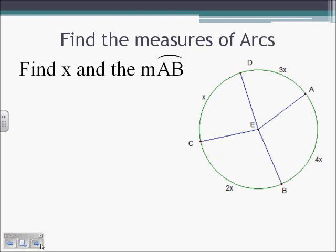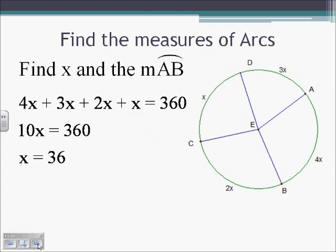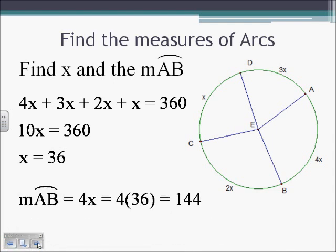Finding the measures of arcs: find x and the measure of arc AB. The measure of all the arcs in a circle adds up to 360. So 4x plus 3x plus 2x plus x equals 360, meaning 10x equals 360, so x equals 36. Arc AB is 4x, so arc AB equals 4 times 36, which is 144.